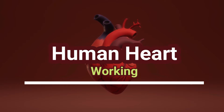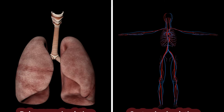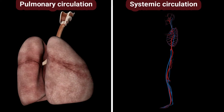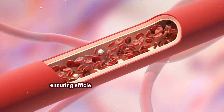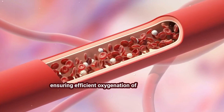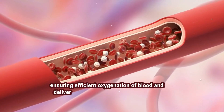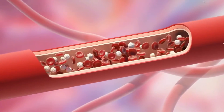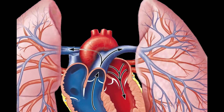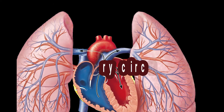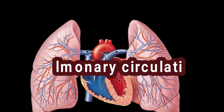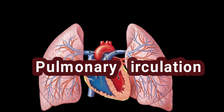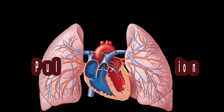The human heart operates on a double circulation system, ensuring efficient oxygenation of blood and delivery of nutrients throughout the body. Let's begin with pulmonary circulation, the first part of the double circulation system.